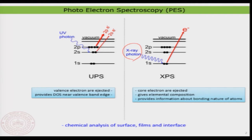In the previous case, ultraviolet photoelectron spectroscopy dealt with energies from a few electron volts to a few tens of electron volts. But now in this class we will be looking at a spectrum which is actually much deeper in binding energy. This technique allows us to do chemical analysis of the surface, films, interfaces, and whatever material you are investigating.